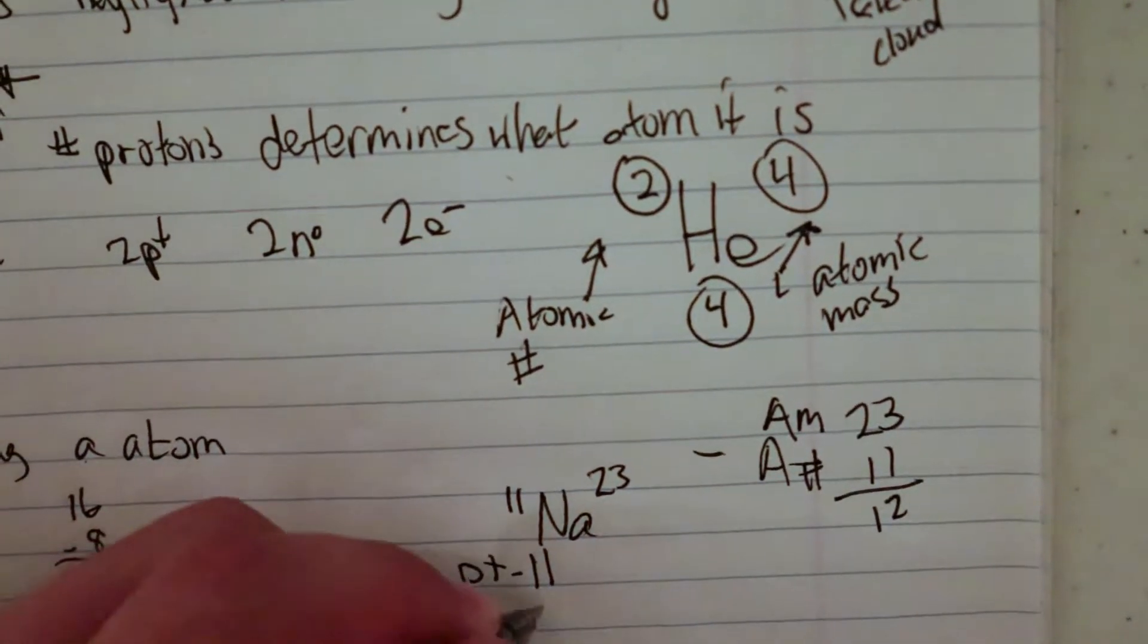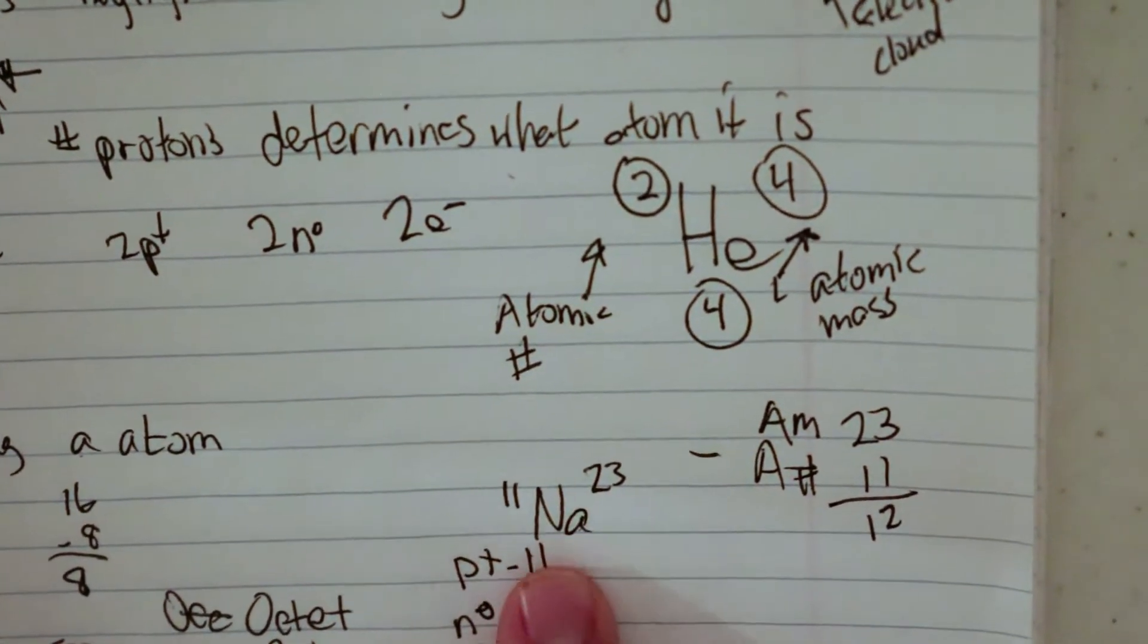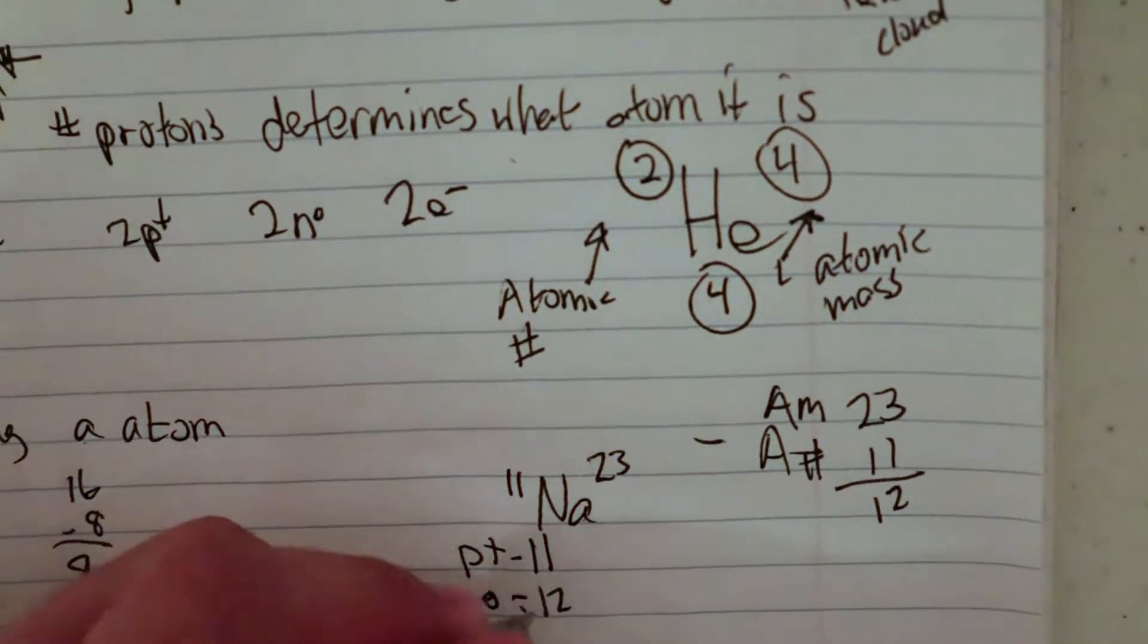So I have 12 neutrons and then electrons going to equal my number of protons, so 11 there.